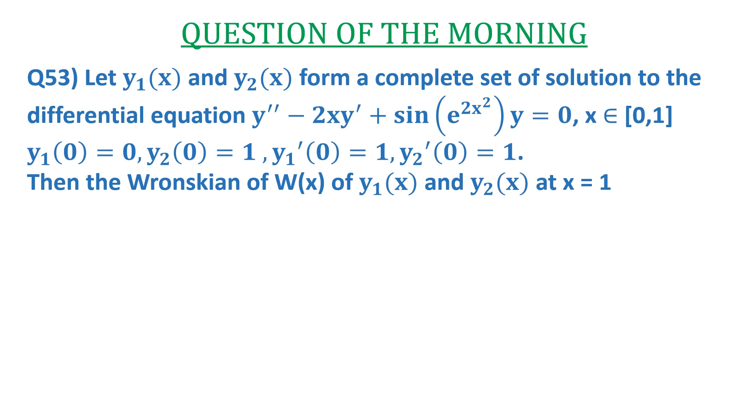y₁'(0) = 1 and y₂'(0) = 1. Then the Wronskian of W(x) of y₁(x) and y₂(x) at x = 1. The options are: (a) e², (b) -e², (c) e, and (d) -e.